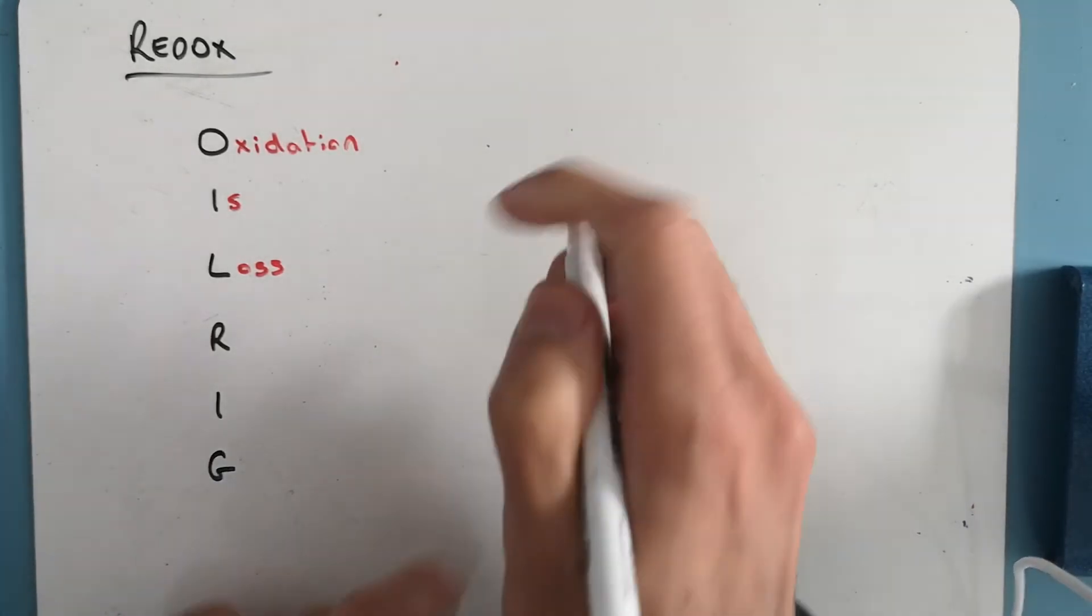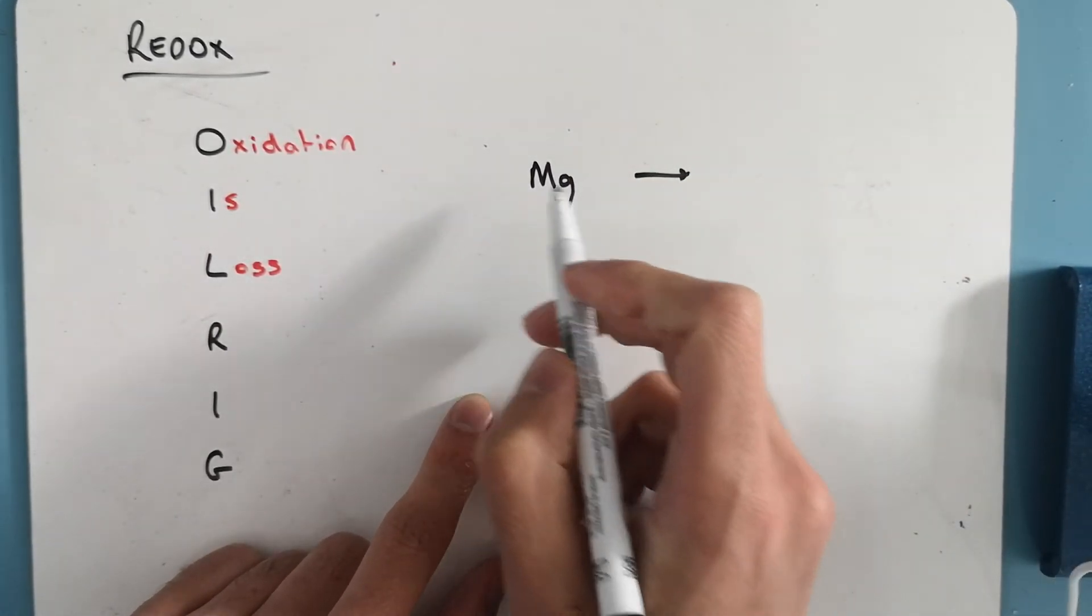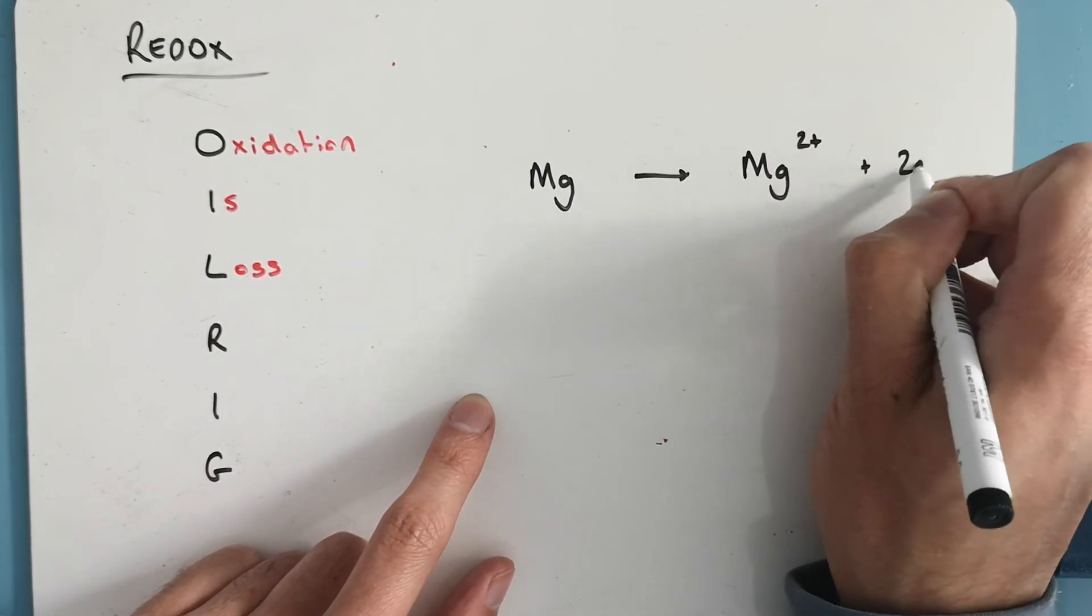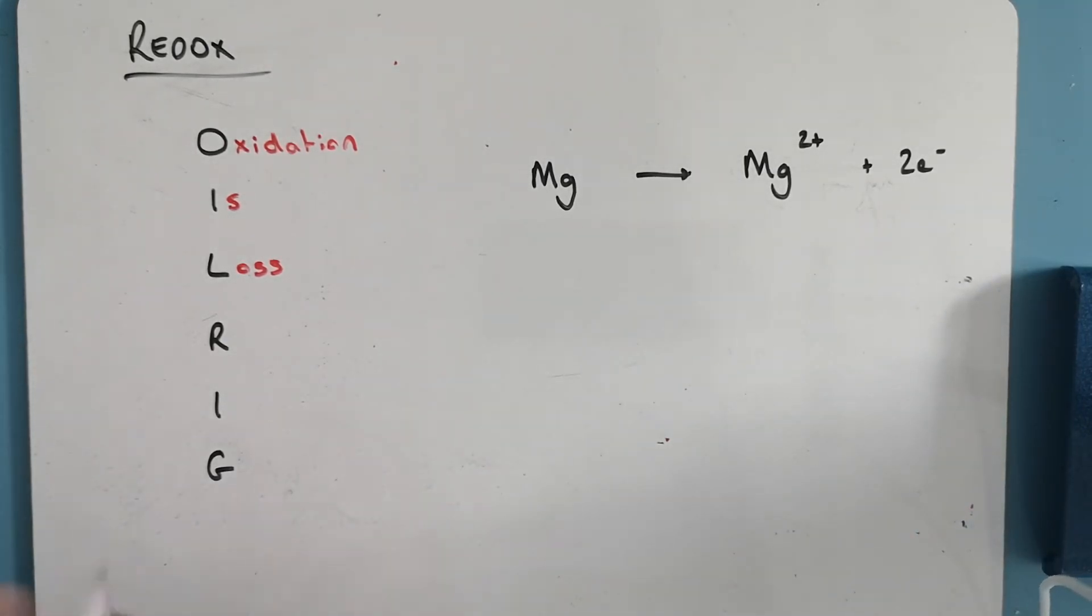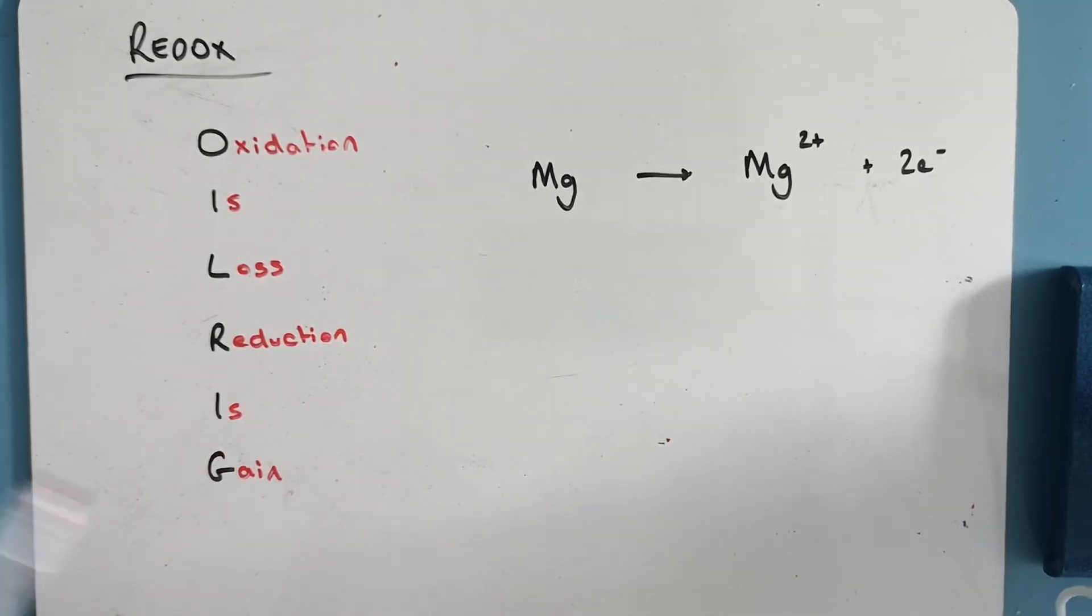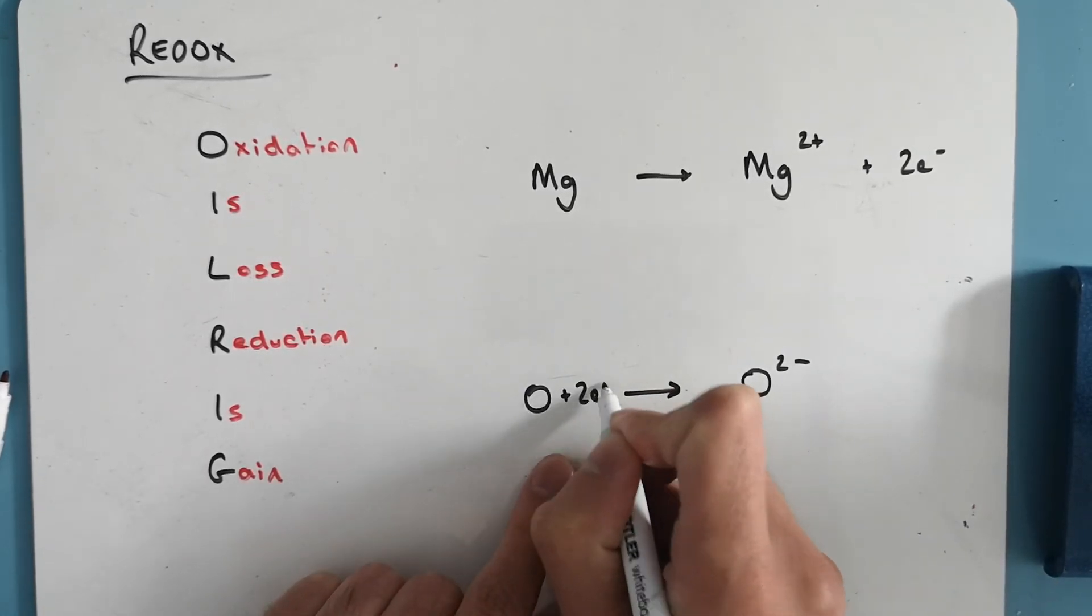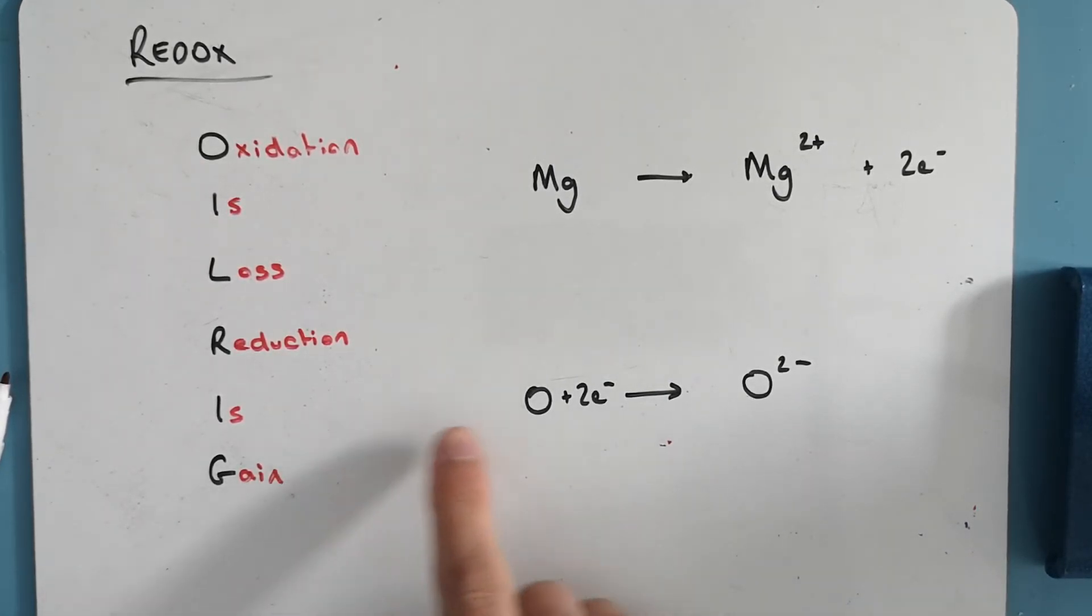So an example of this would be magnesium, which as an element has no oxidation state, going to Mg^2+. This is oxidation. It has lost two electrons. Reduction is the gain of electrons.